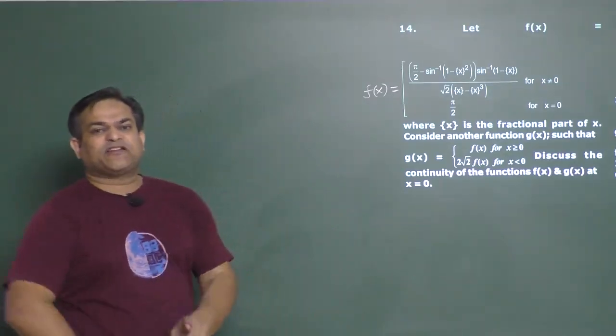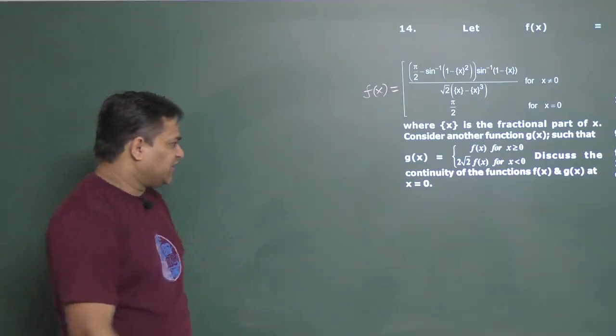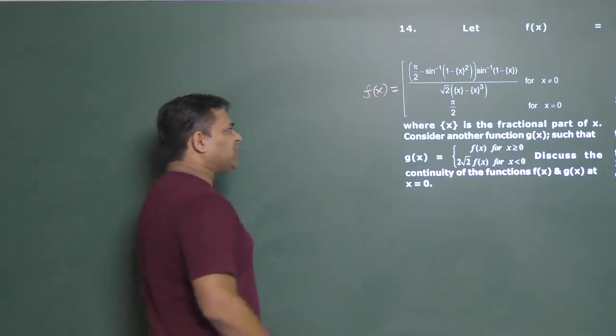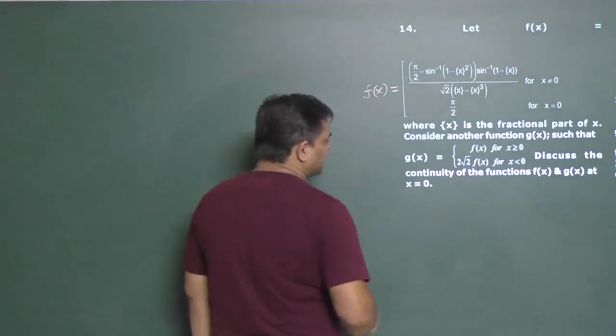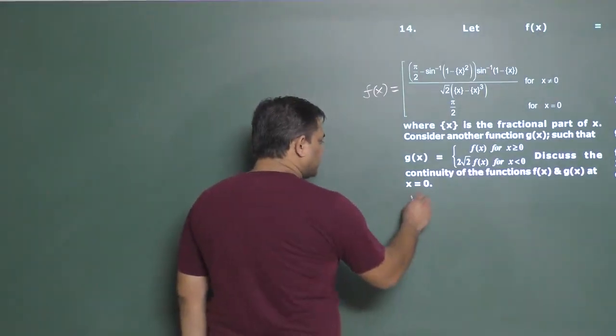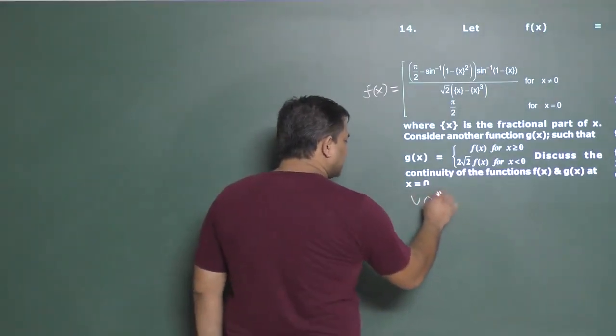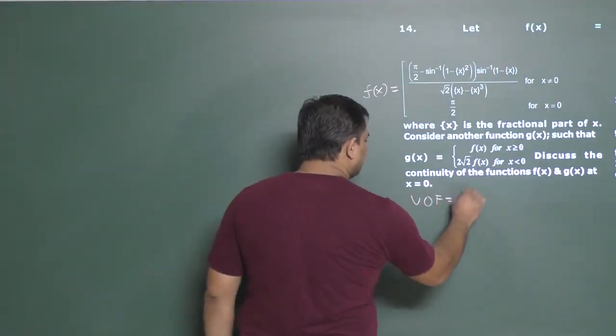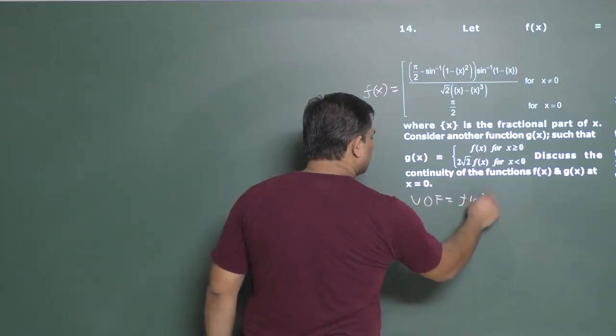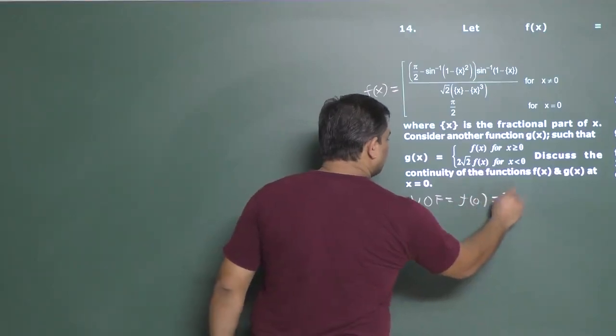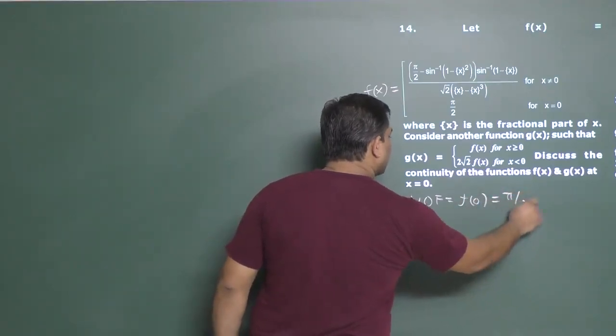Let's start with f(x). The value of the function is the most straightforward to find. f(0) will be π/2.